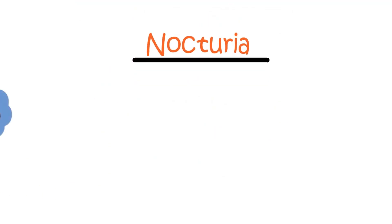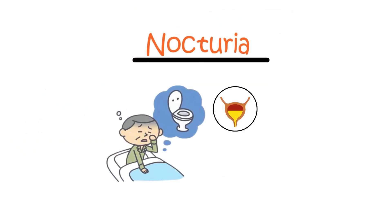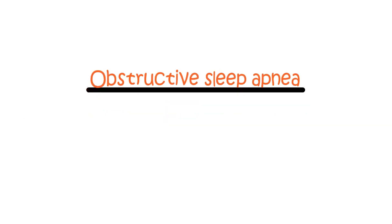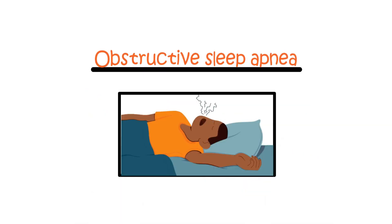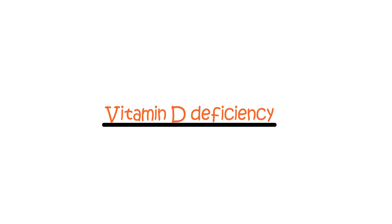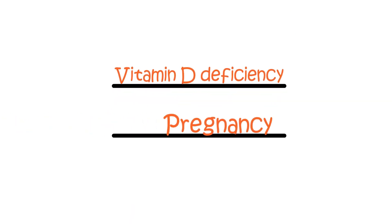Nocturia, having to get up frequently in the night to pass urine due to an overactive bladder or an enlarged prostate gland. Obstructive sleep apnea. Breathing problems at night interfering with sleep. Vitamin D deficiency. Pregnancy.